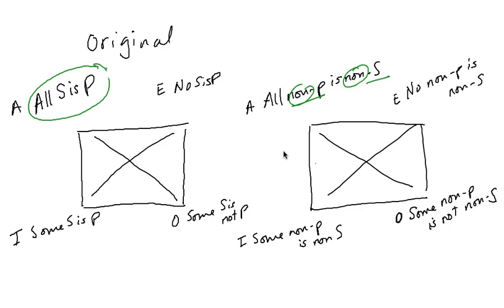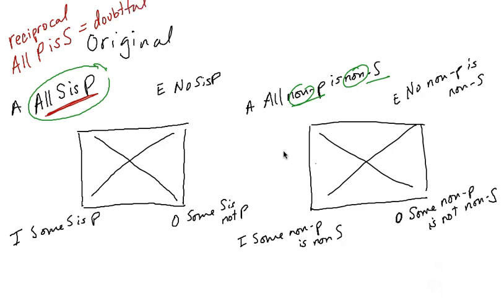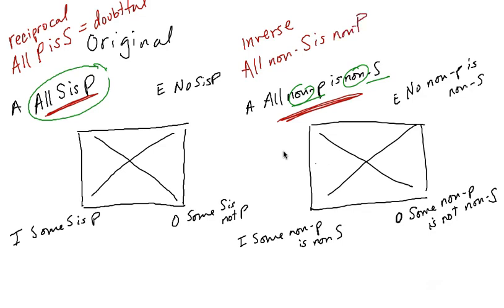There's one more thing I need you to know about — the reciprocal and the inverse. The reciprocal is the A statement that's backwards: 'all P is S,' and this is doubtful every time. For example, 'all baseball hats are black' — the reciprocal says 'all black things are baseball hats.' We don't know that; I have a black shirt on and that's not a baseball hat. So it's doubtful. There's also a full contrapositive version called the inverse: 'all non S is non P' — that one is also doubtful.